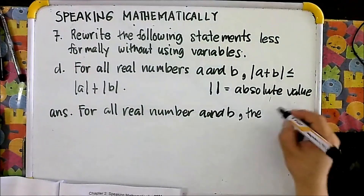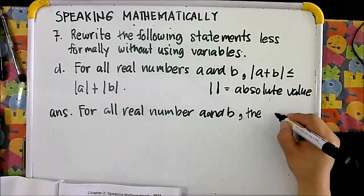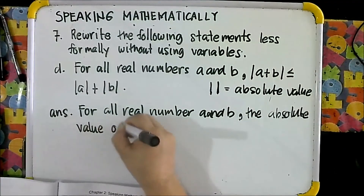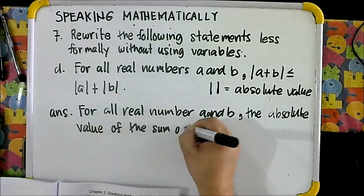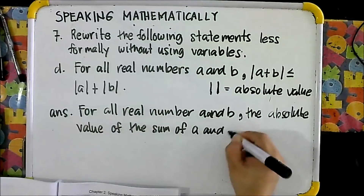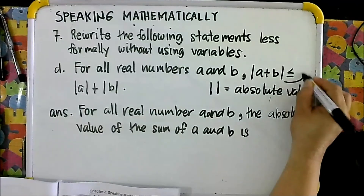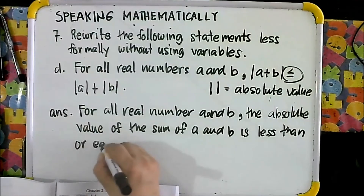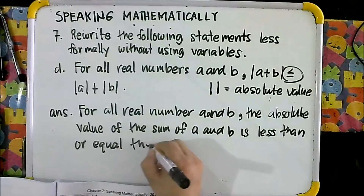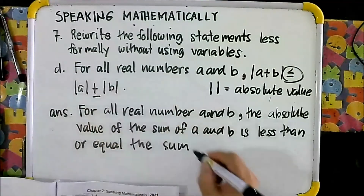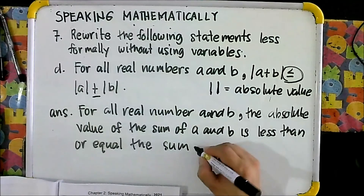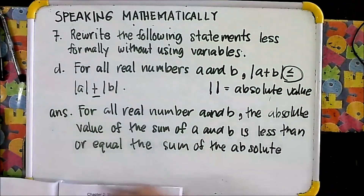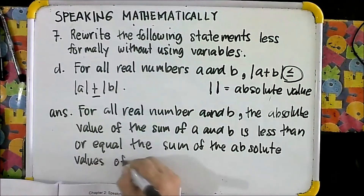The absolute value of the sum of A and B is less than or equal to the sum of the absolute values of A and B.